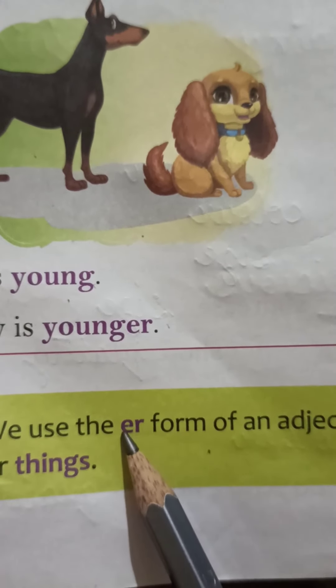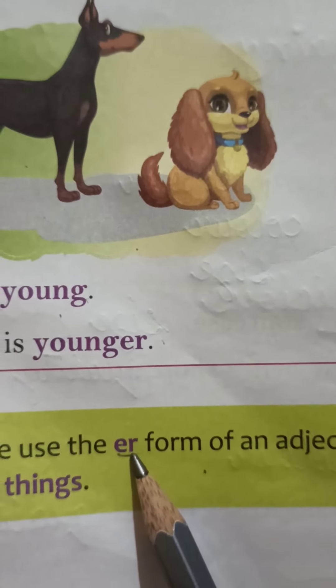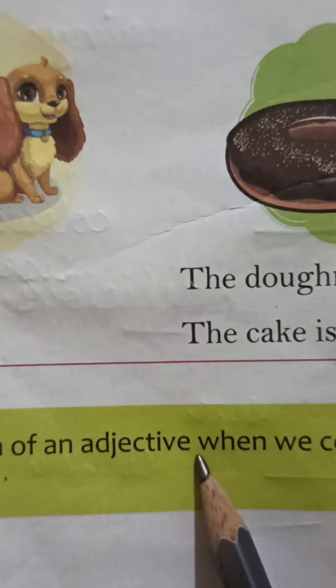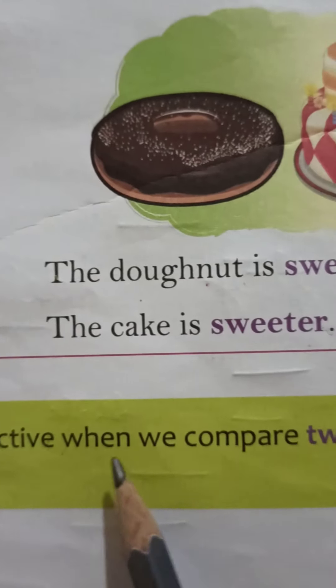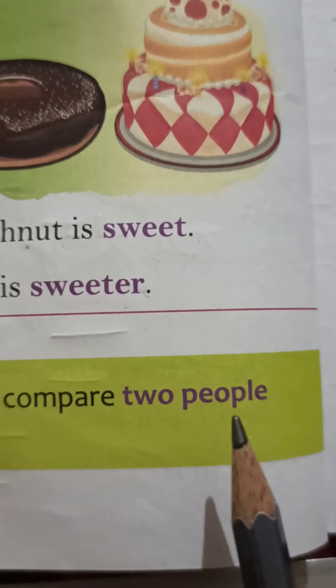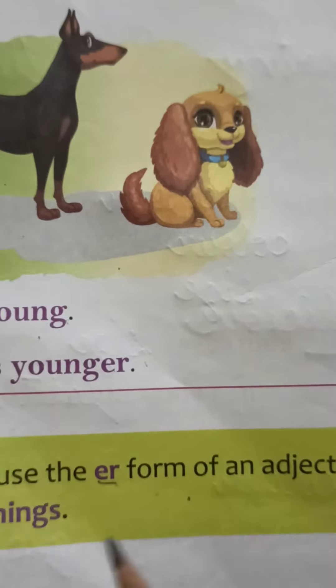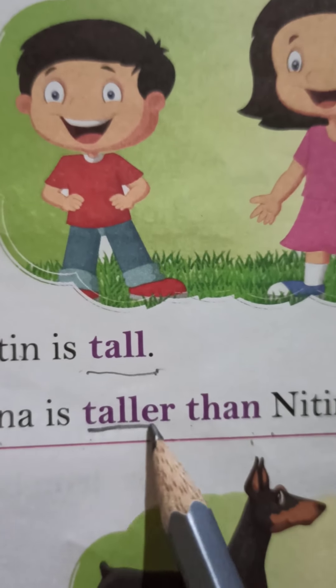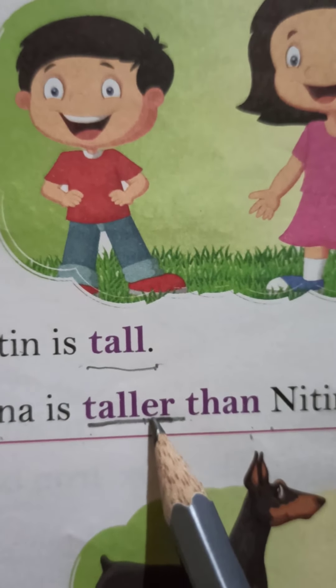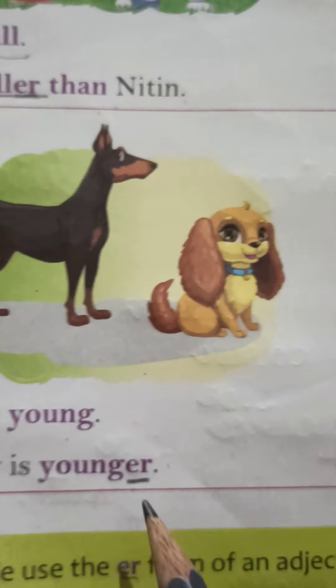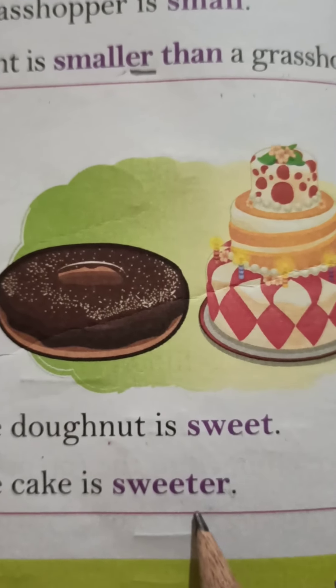We use the ER form of an adjective — हम ER लगाते हैं adjective में — when we compare two people or things. जब भी हम दो लोग या दो चीजों को compare करते हैं. जैसे: tall, taller; small, smaller; young, younger; sweet, sweeter. We put ER at the end.